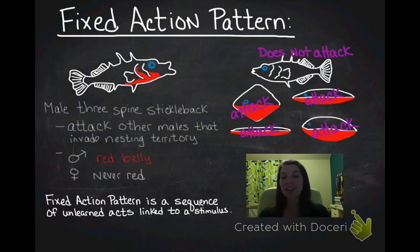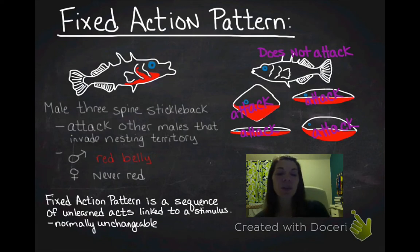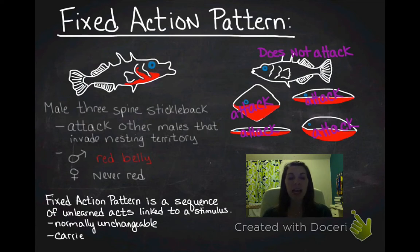Sequence of unlearned acts means that this is a completely innate behavior. This is not learned at all. It's normally an unchangeable behavior. Typically when you have a fixed action pattern, you can't deviate from that fixed action pattern.